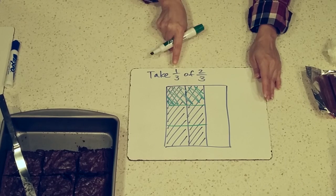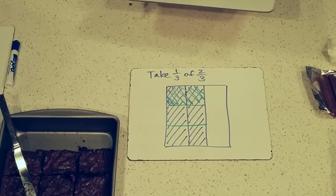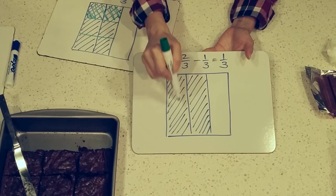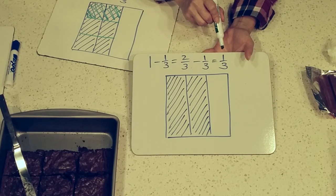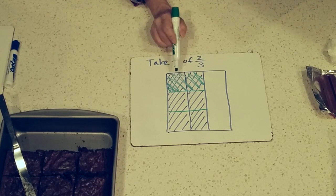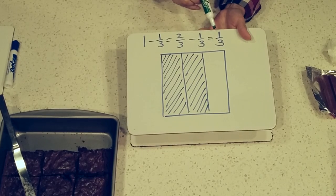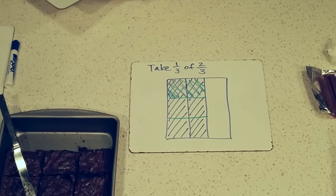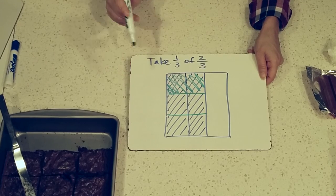If I take a third of two-thirds, kids think they're subtracting because they're taking it away. But that really doesn't work because if you had a whole brownie pan and took a third away, you're left with two-thirds. If you subtract a third from that, you end up with one-third. But here, do you end up eating one-third? If I took a third of two-thirds, am I left with one-third? No, I'm left with these four pieces. So subtraction does not work here. When you take a part of an amount, you are not subtracting — you are actually multiplying.